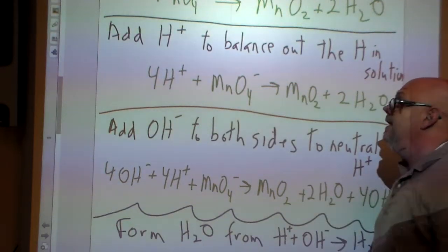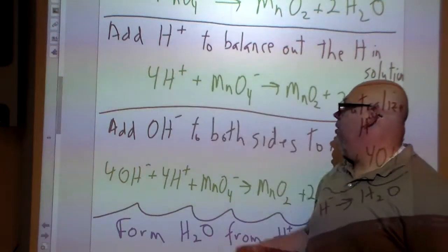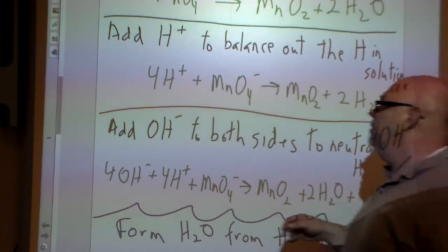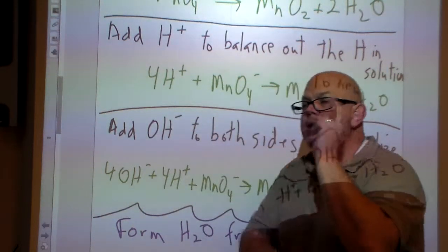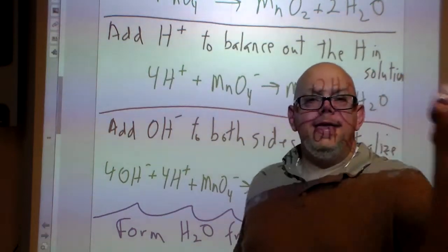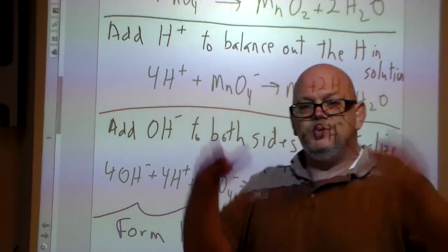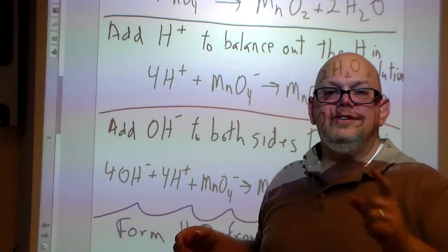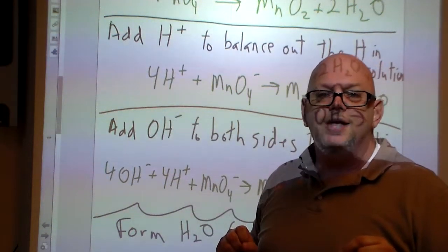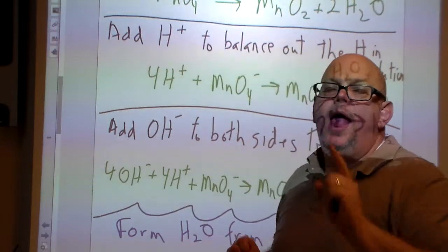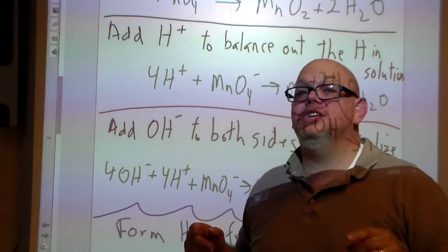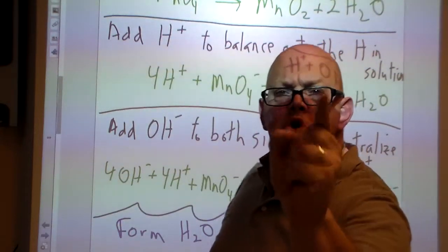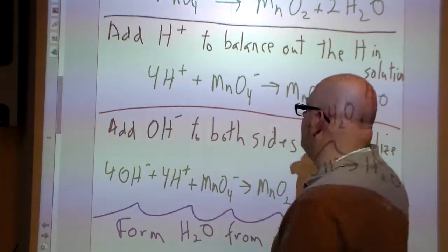But wait, it's a basic solution. You can't have hydrogen ions running loose because that is an acid. You're right, that's true. But we're going to get those hydrogen atoms. Now the thing is, in order to cancel these out, we want to neutralize the solution. So what do we do? We add OH minus.